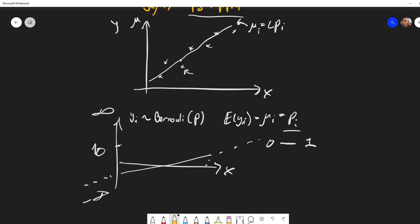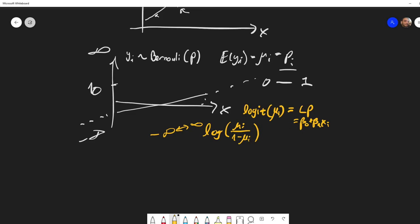So for a Bernoulli distribution, for binary or binomial regression, the most common link function is the logit. The logit of mu equals some linear predictor, which is beta_0 plus beta_1 times x_i, etc. And what is the logit? The logit is just the log of mu_i divided by 1 minus mu_i. And while mu_i can only be between 0 and 1, the logit of mu_i can be between minus infinity and infinity.